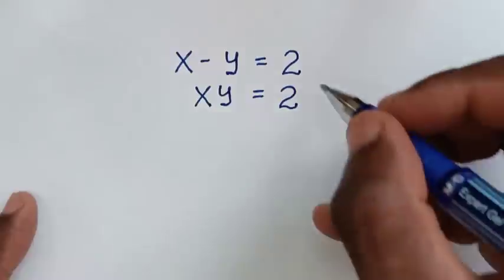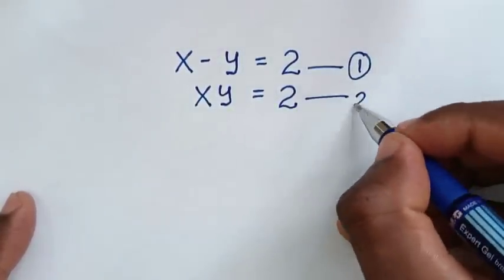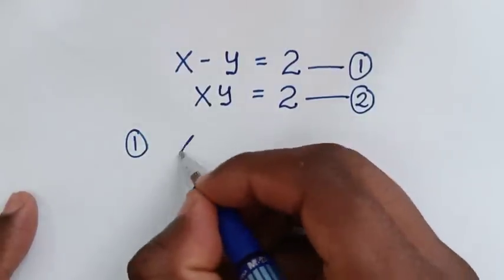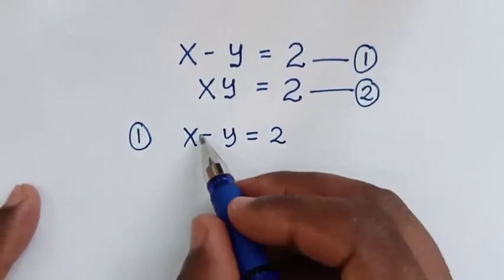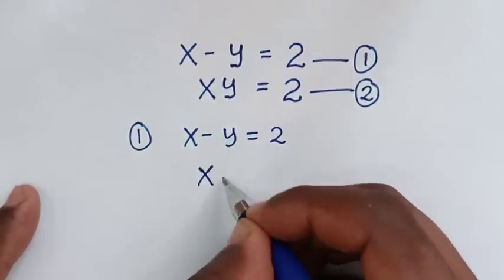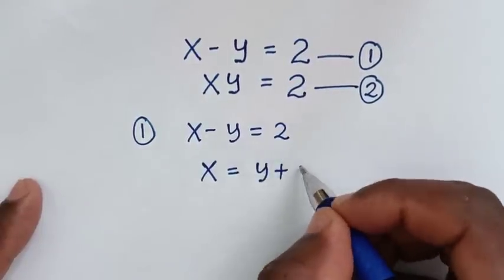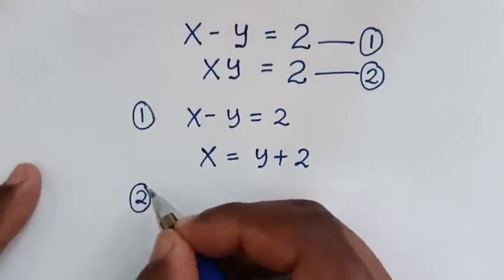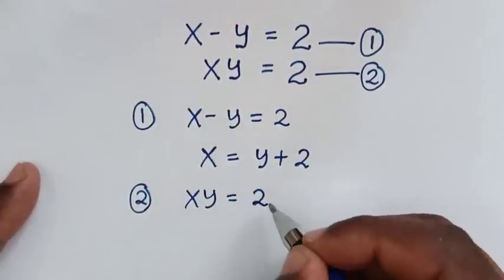In the first step we start by letting this as equation 1 and this as equation 2. Then from equation 1, which is x minus y is equal to 2, we'll take this minus y to the right side. Then from equation 2, which is x times y is equal to 2.